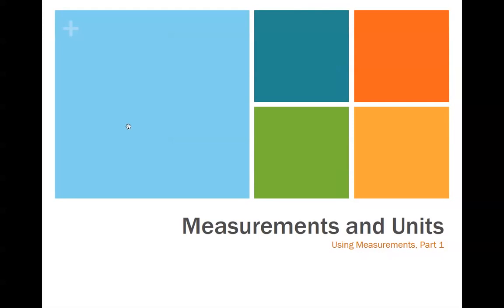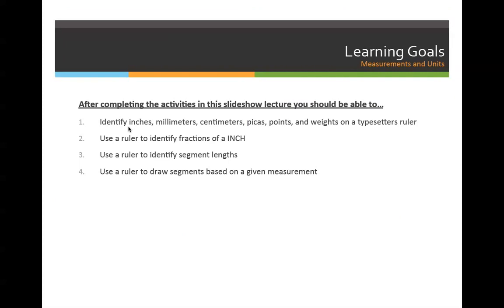Our next lecture is on measurements and units, and it says part one, because we're going to revisit this when we get to our die line lecture. Our objectives are to identify things that might be on a typesetter's ruler. We're going to do it at a very surface level right now, but we'll get into calculating the differences between points and picas later in the semester. Today, we're just going to identify them and be able to measure with the ruler.